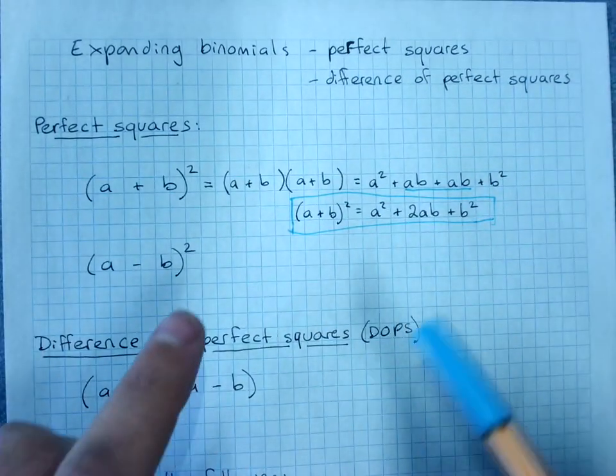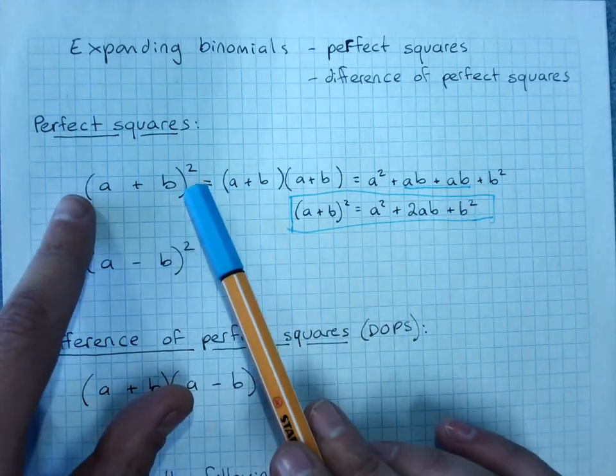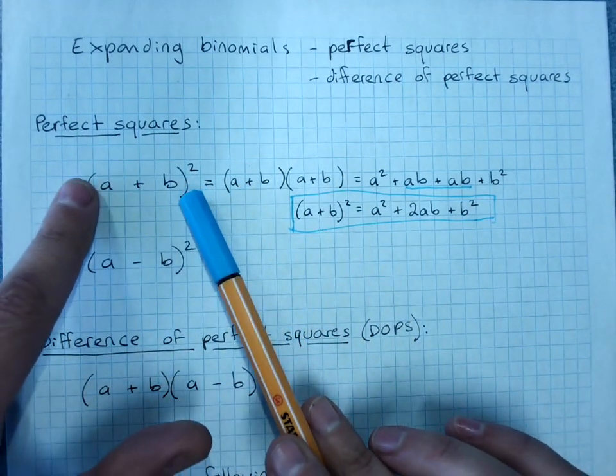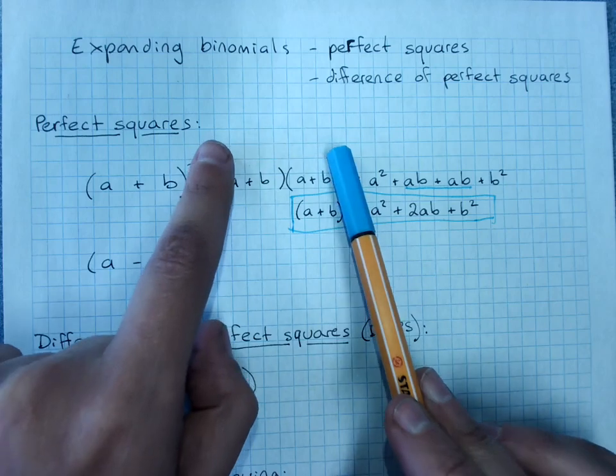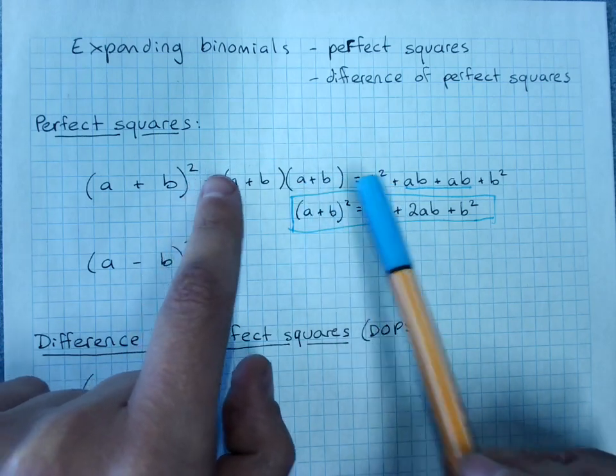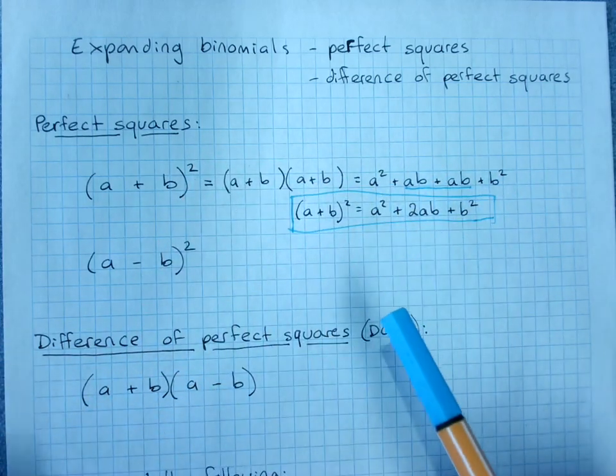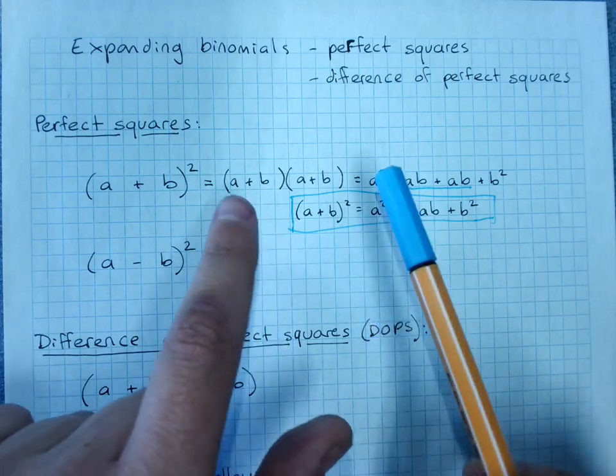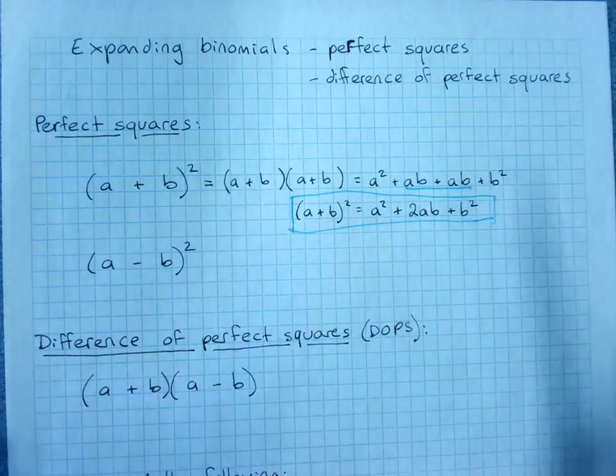You can go straight from question to answer with no other working required if you remember this rule. If you are at all likely to mess up, then rewrite the perfect square as two brackets, expand it, and simplify. It's not worth messing up if you don't remember this rule.